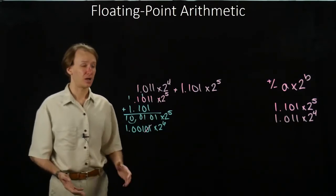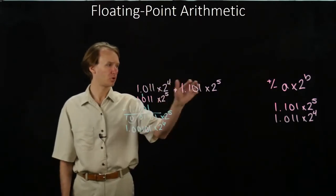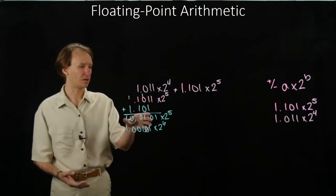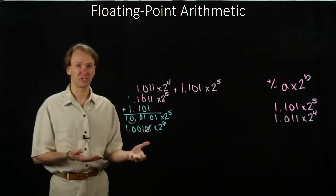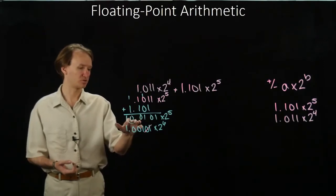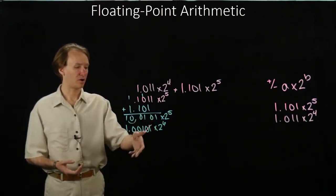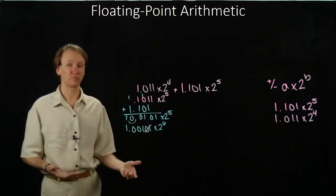If I was going to do subtraction, I'd pretty much do exactly the same thing. You make sure that both of your exponents are the same number so that you can then line up the two significands and do the arithmetic. At the end, you make sure that you've only got one bit in front of the binary point, and then round off however many bits you need so that you're back to your original number of bits.